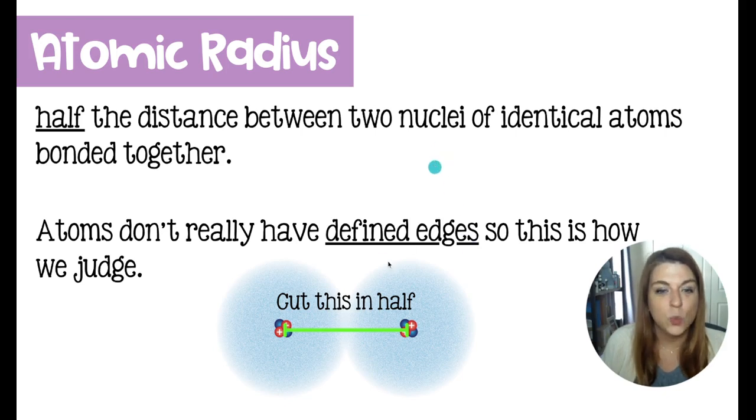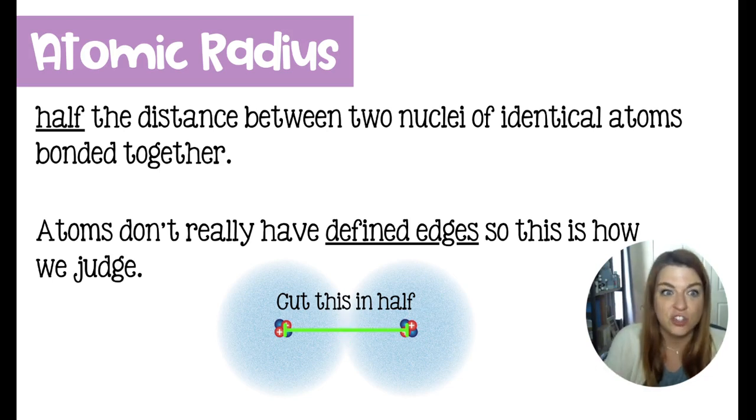To measure atomic radius, we take two identical nuclei, for example two oxygen atoms, and then we will take the distance between the two nuclei and cut it in half, because we will come out right about here, which should be the edge of each atom.